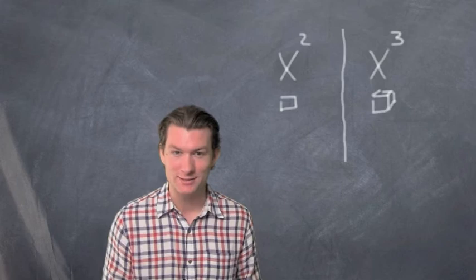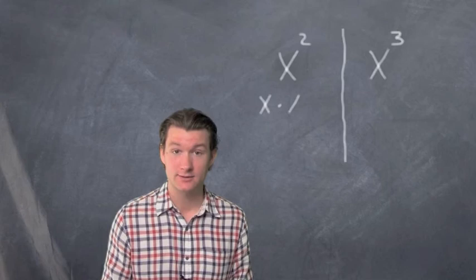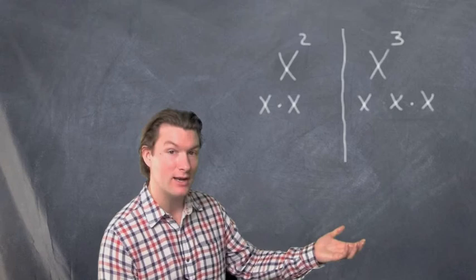Let's show what the difference is between x to the second and x to the third. You might remember that x to the second means x times x. x to the third means x times x times x. You multiply that number by itself 3 times.